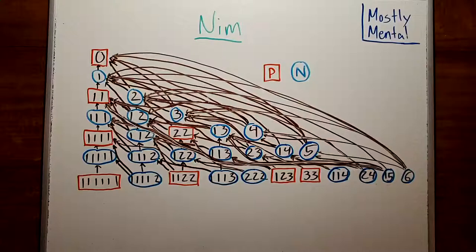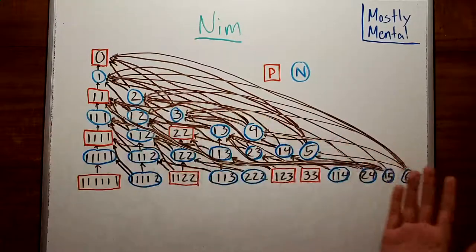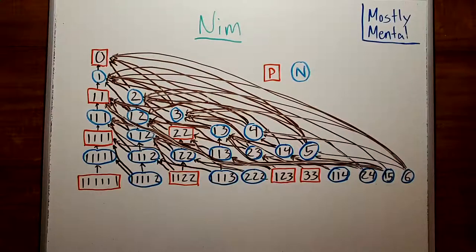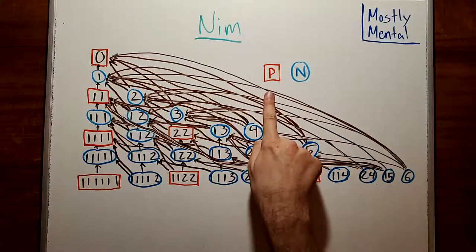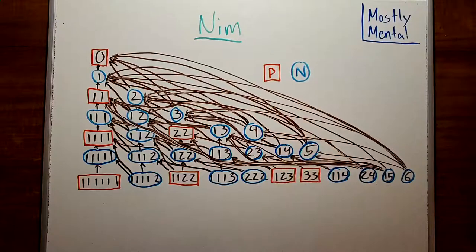Now let's get back to NIM. Here, I've drawn in every position with up to six counters, with arrows for each possible move. And I've labeled each position as either P or N, based on the rule we just described. Okay, so now we've got some data. And we can start to see some hints of patterns.